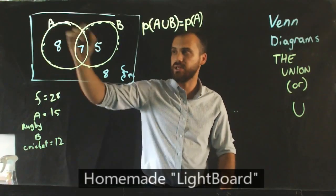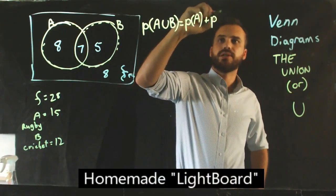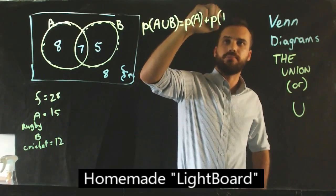The probability of A is this big circle here, the 8 and the 7, plus the probability of B.